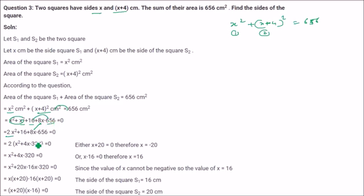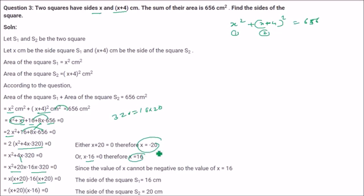16 minus 656 gives minus 640. Dividing both sides by 2, the equation becomes x square plus 4x minus 320 equal to 0. Now 320 can be written as 16 into 20. So 4x is written as 20x minus 16x, giving x square plus 20x minus 16x minus 320 equal to 0. Factoring: x plus 20 and x minus 16. From here x equal to minus 20 is discarded; x equal to 16. The side of the first square is 16 and the other is x plus 4, that is 20.